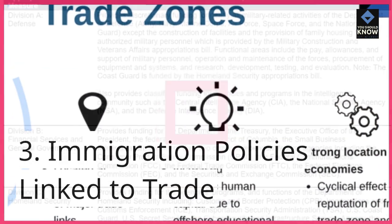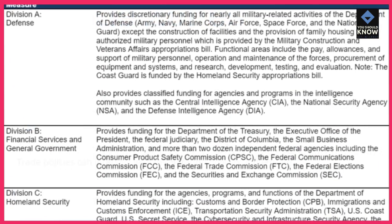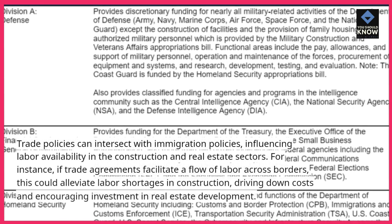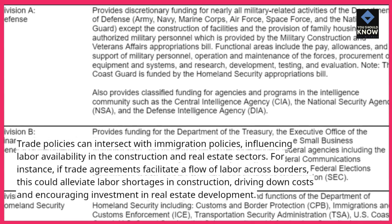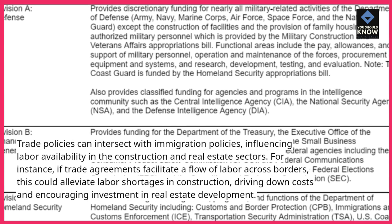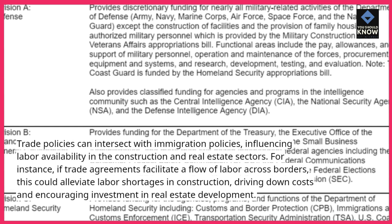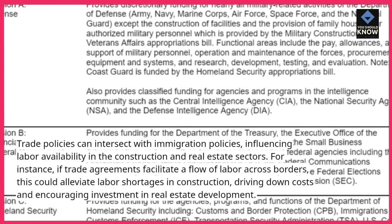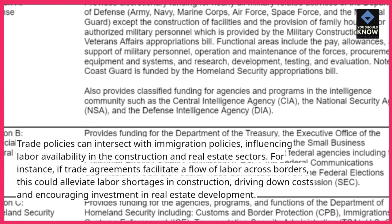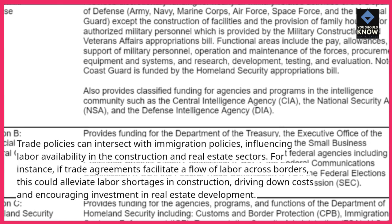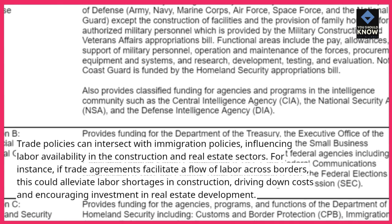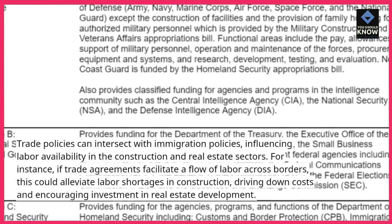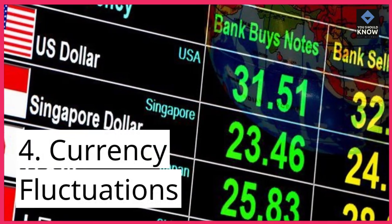3. Immigration policies linked to trade. Trade policies can intersect with immigration policies, influencing labor availability in the construction and real estate sectors. For instance, if trade agreements facilitate a flow of labor across borders, this could alleviate labor shortages in construction, driving down costs and encouraging investment in real estate development.